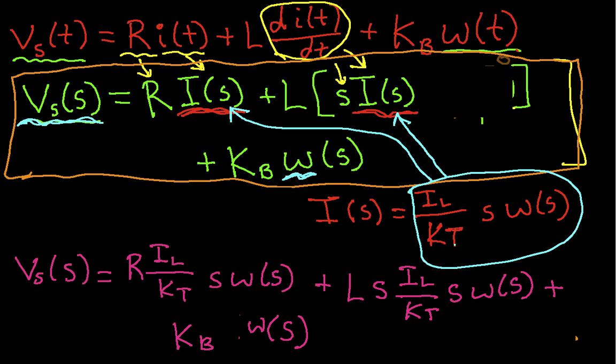Okay? So now I have my equation that relates the Fourier transform of the input to the Fourier transform of the output. Now you'll notice that I have the Fourier transform of the output in three different places. And every term on the right-hand side of the equal sign has this Fourier transform of the output, omega s. So I can actually factor that out of this expression.